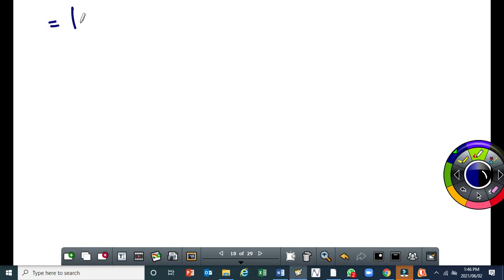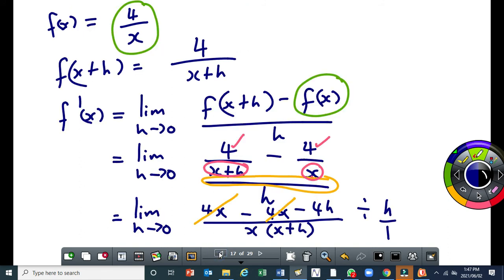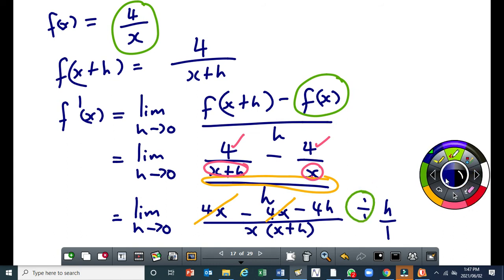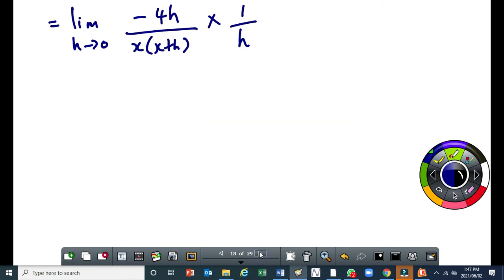It will be equal to the limit as h tends to 0 of minus 4h, all over x times (x+h) times 1/h. I've converted the division sign to multiplication. So I have to invert that fraction, which is h/1. When you do that, this h here cancels with that h.